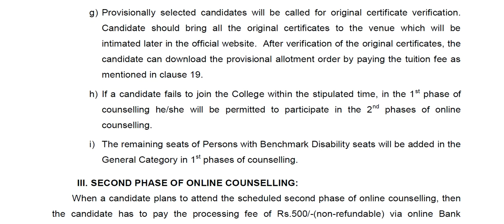You can use the provisional allotment letter. You can download the provisional allotment order by paying the tuition fees as mentioned in clause 19. If you have a self-finance seat, you can pay ₹4 lakhs, and for government seats you pay ₹13,610.